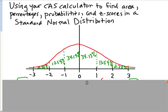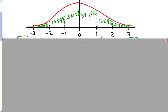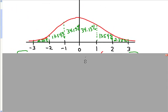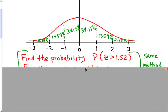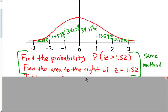And z-scores of negative 1, negative 2, and negative 3 corresponding to 1, 2, and 3 standard deviations below the mean. The first problem is finding the probability of a z-score being greater than 1.52, which is essentially the same as finding the area to the right of z = 1.52.